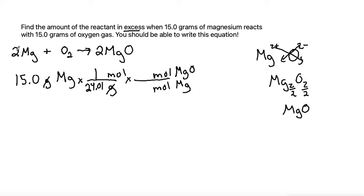The coefficient in front of magnesium goes with the moles of magnesium. The coefficient in front of magnesium oxide goes in front of magnesium oxide, and that cancels out our unit of moles of magnesium, and now we're in a unit of moles of magnesium oxide.